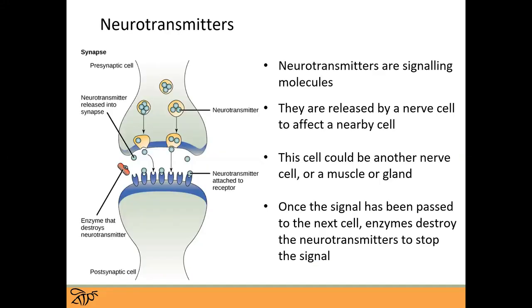These neurons are individual cells with a very small gap between them. How does the message jump from one cell to the next? It's sent along the nerve by an electrical signal, but at the end, the cell releases what are called neurotransmitters — signaling molecules that bridge that gap, float across, and activate the next nerve cell, continuing the chain reaction. Sometimes the next cell is another nerve cell; sometimes it's the muscle or gland the signal is meant to reach.